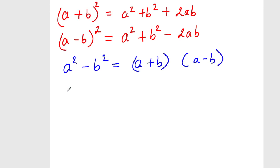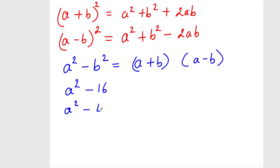Here I take an example. Suppose in a question they have given a squared minus 16. So, how to solve this? First, convert this into an identity. So, a squared can be written as a squared, and 16 can be converted into 4 squared, because 16 is the square of 4.